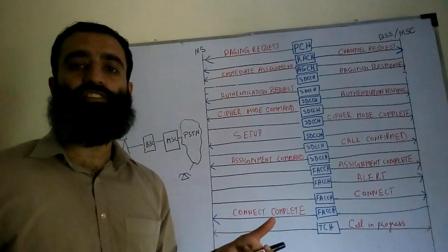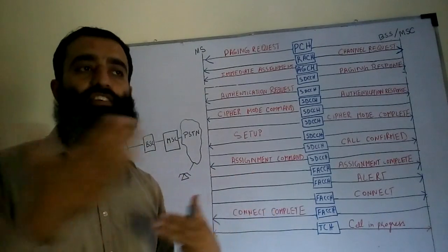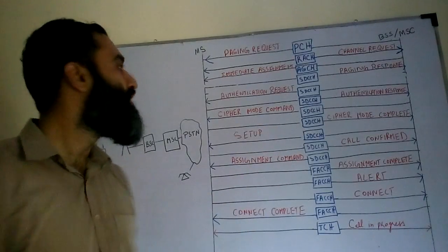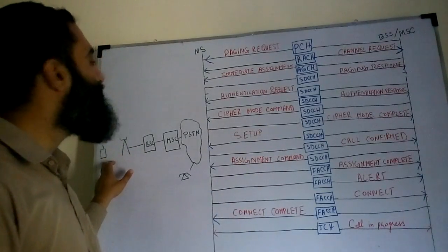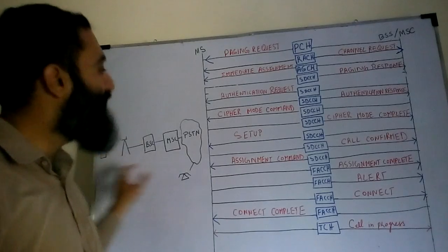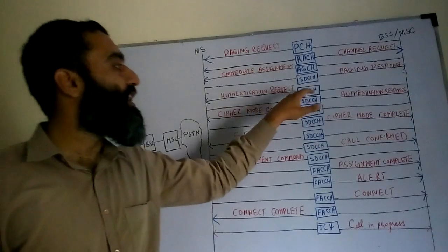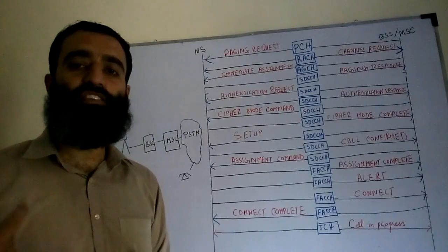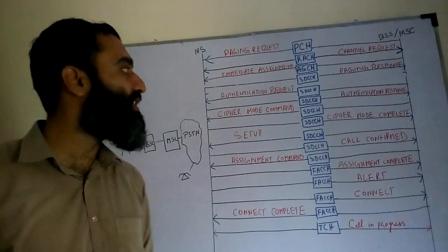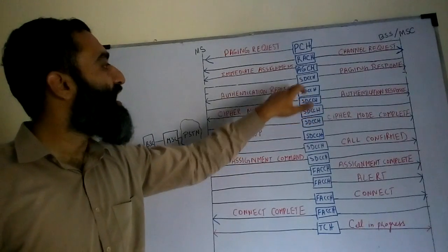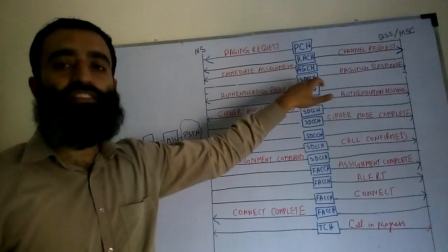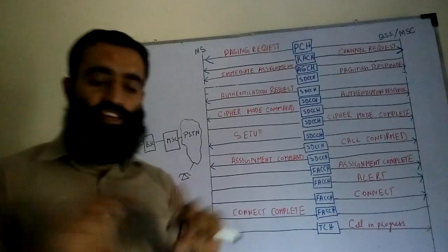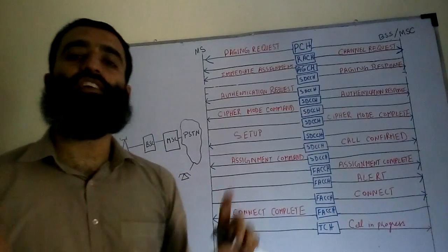As we know, the SDCCH channel is a bi-directional channel that exists simultaneously on the uplink and the downlink. So in the uplink, the mobile station acknowledges the assignment of the SDCCH channel on the same SDCCH channel. Once this initial signaling is complete, the network wants to determine whether this is a valid mobile user or not.